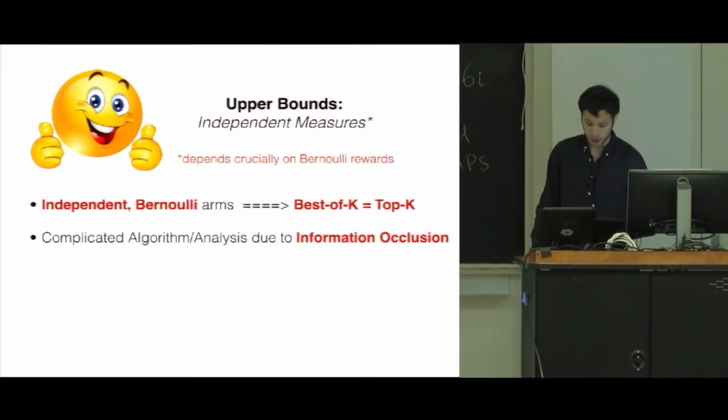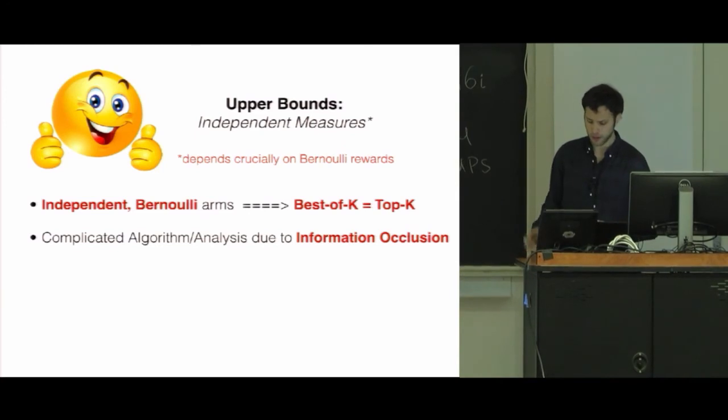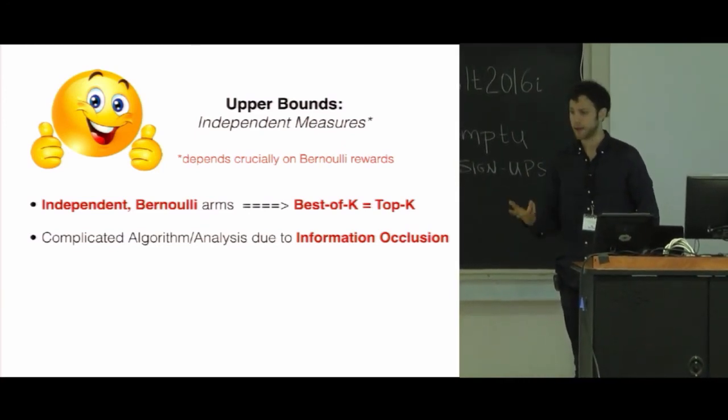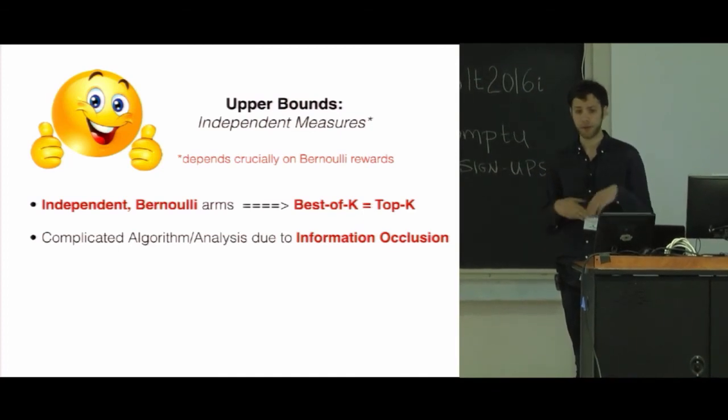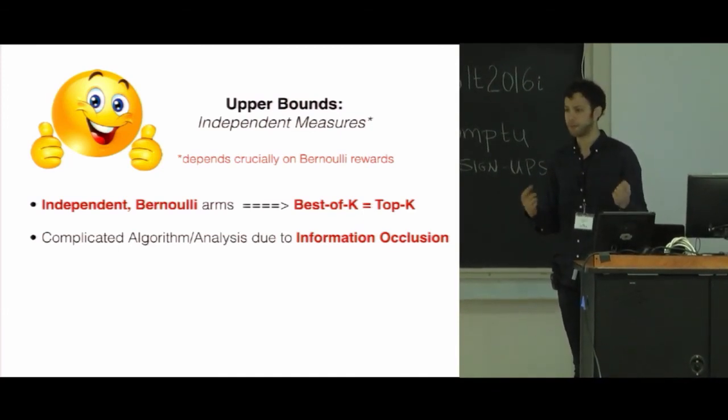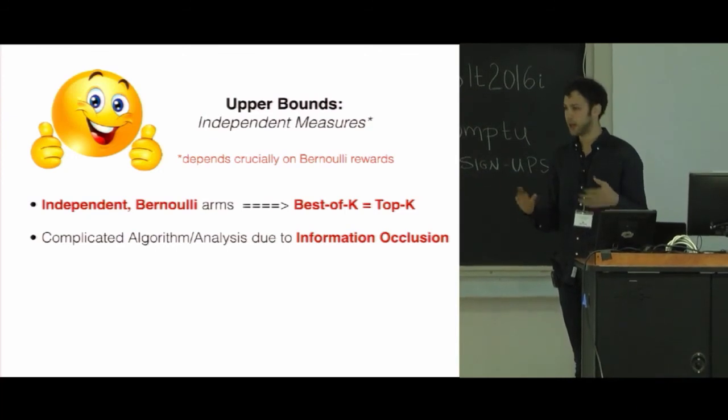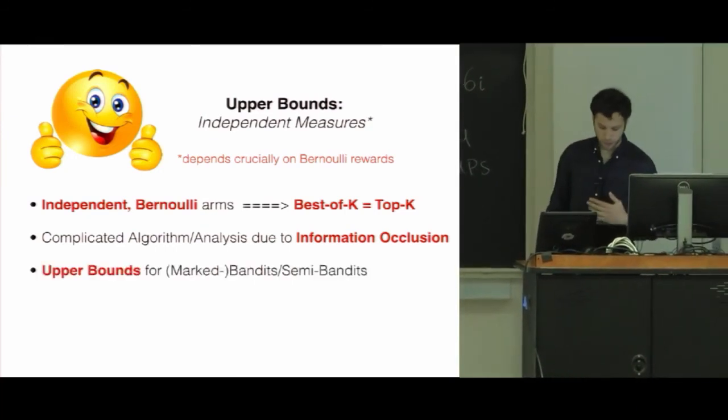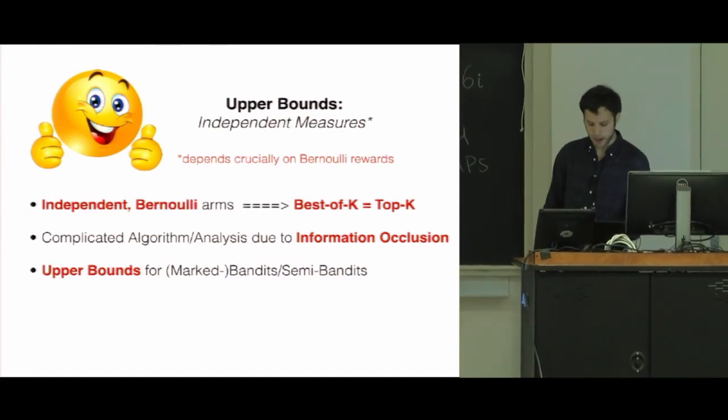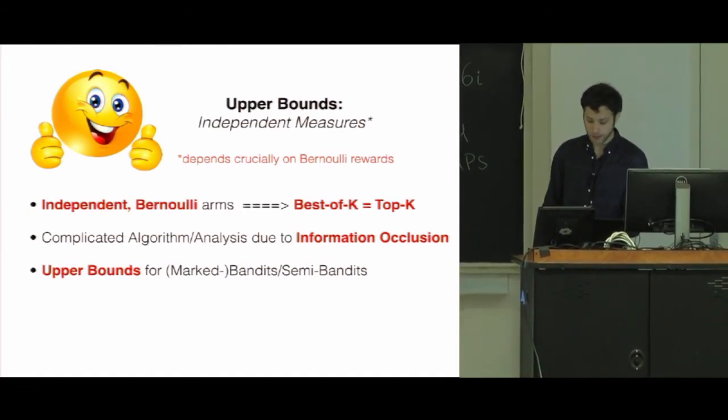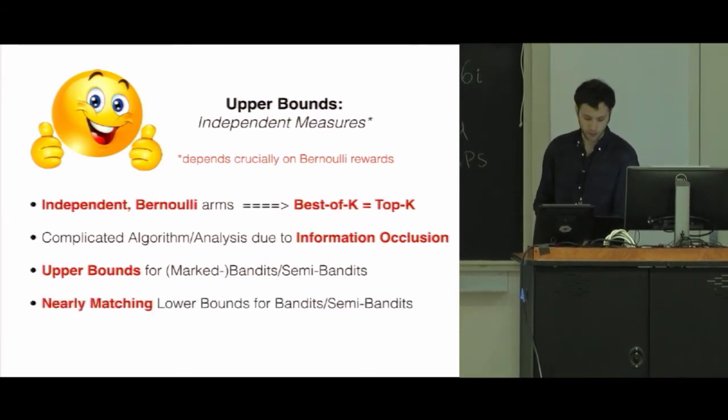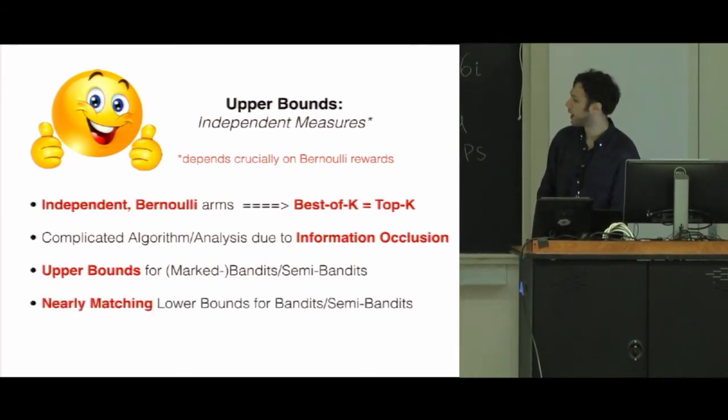The algorithm actually is a lot more complicated than one would expect due to information occlusion. So the idea is that if I have bandit feedback and I give you a subset of arms, even if they're all independent, it's difficult to tell which arm in that subset I've played is responsible for either a reward or a loss. So we actually are able to have upper bounds that depend on this information occlusion term for all the cases. We note semi-bandits is actually a very simple adaptation of top K. And we have nearly matching lower bounds which also take this information occlusion into account.